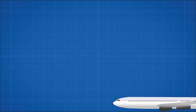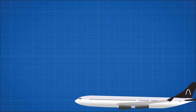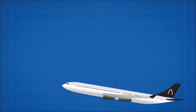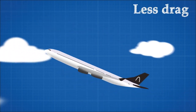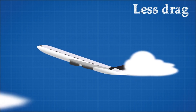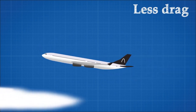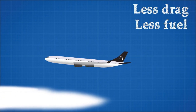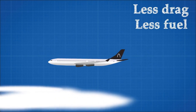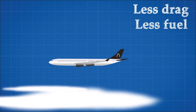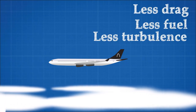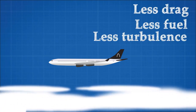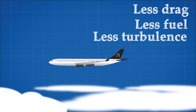As passenger planes became more popular, planes needed to fly higher. Flying high means less drag because the air density is lower in the upper atmosphere, so less fuel is wasted. Flying high also means a more comfortable flight, because the plane can now fly above the turbulent lower atmosphere.